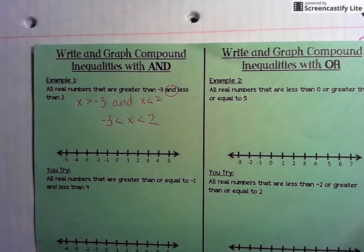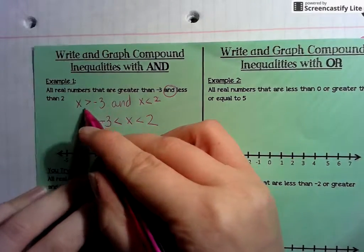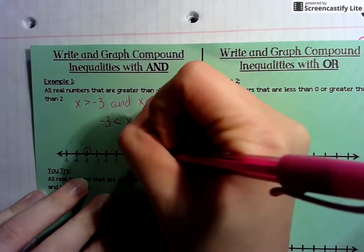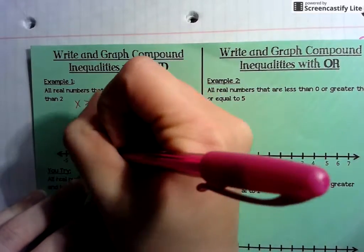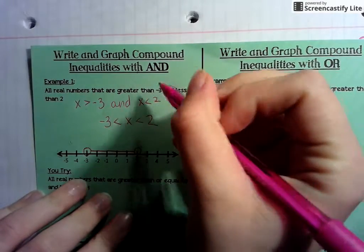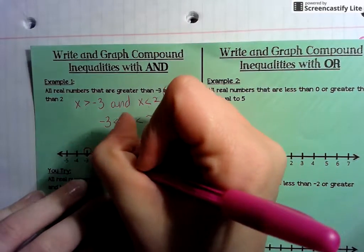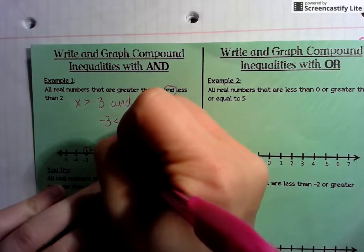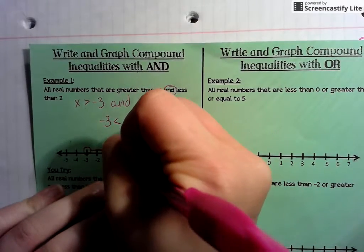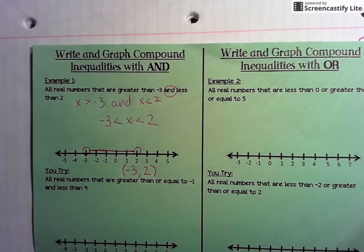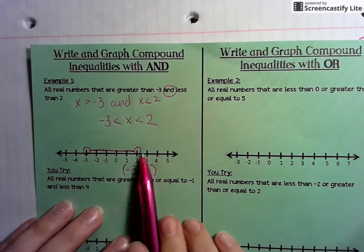To graph this, because they're both 'not equal to,' you graph an open circle at negative 3 and an open circle at 2. You want numbers greater than negative 3 going one way and numbers less than 2 going the other way. For 'and' statements, the graph always faces inward. The interval notation is parenthesis negative 3 comma 2 parenthesis, since neither endpoint is included.